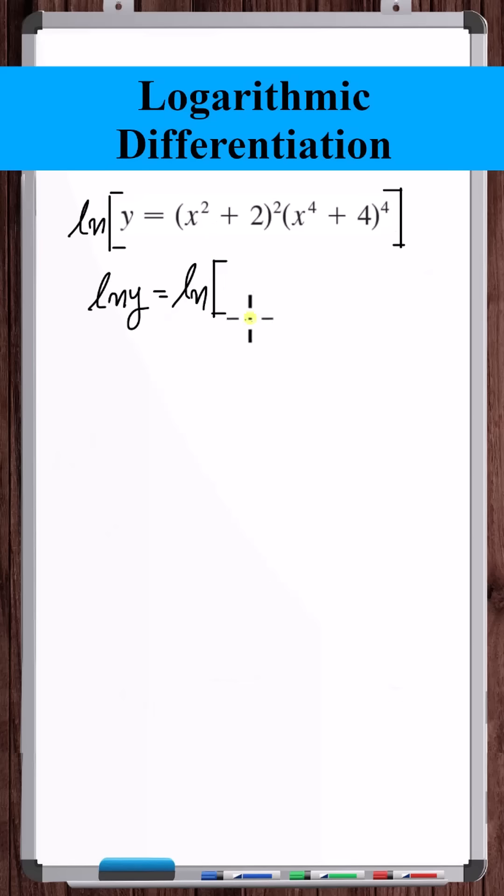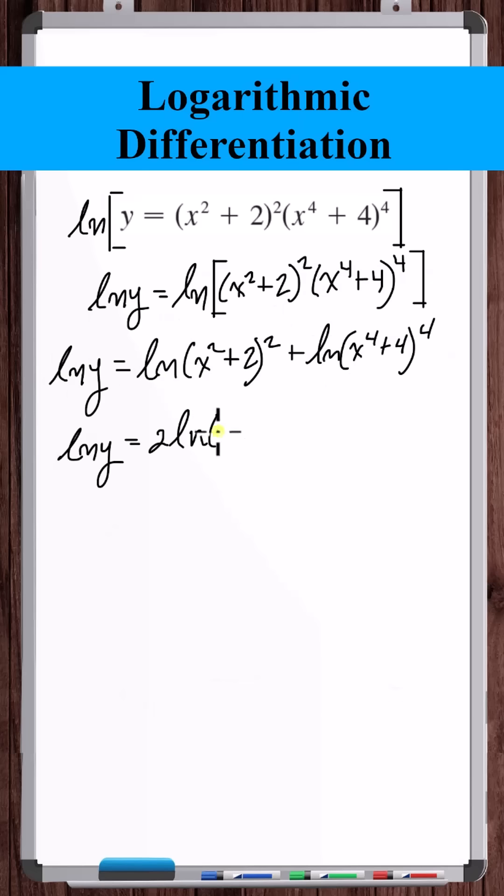So let's take the natural log of the entire equation. Now we can separate this out into two separate logarithms. Now we can bring these exponents to the front of the logarithm.